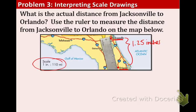So, we're going to write the scale first. Just one inch over 110 miles. What this means is every inch on this map represents 110 miles in real life. If you actually went to Florida. Now, on the other side, we are given the 1.25 inches, which is the distance on the map.